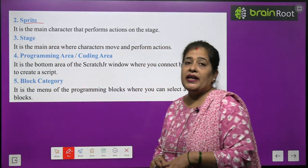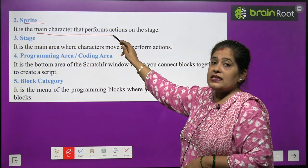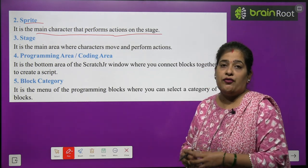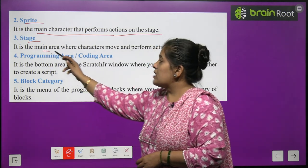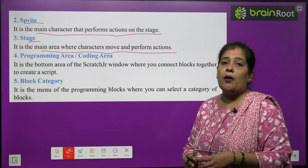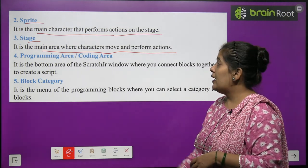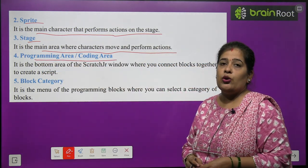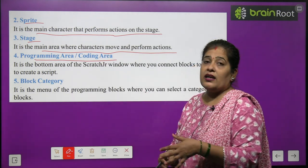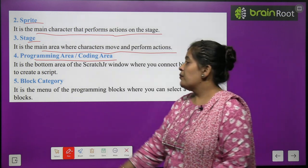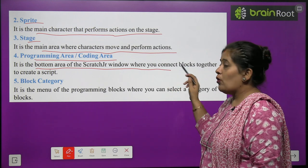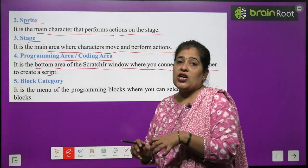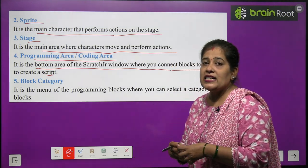Number two, sprite. It is the main character that performs action on the stage. Number three, stage. It is the main area where characters move and perform action. Number four, programming area, also called the coding area. It is the bottom area of the Scratch Junior window where you connect blocks together to create a script.